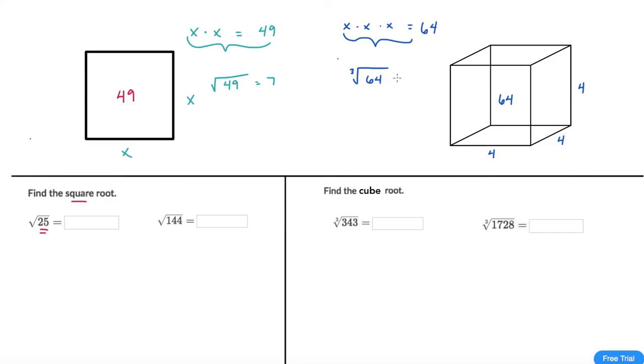It looks like the square root sign with a little 3 here and then the base of that is the number 64. And what it's asking is what number times itself three times gets you to 64. And in this case because we wrote it down we know that it's 4.